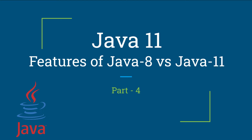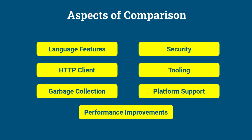You are watching part 4 of the video series on Java 11. Java 11 and Java 8 are two major releases of the Java programming language, and they differ in several aspects including language features, performance improvements, and enhancements to the standard libraries. Here are some aspects based on which we can compare Java 8 and Java 11.